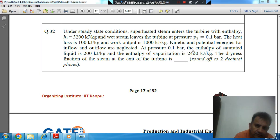At pressure 0.1 bar, the enthalpy of saturated liquid is 200 kilojoules per kilogram and the enthalpy of vaporization is 2400 kilojoules per kilogram. The dryness fraction of the steam at the exit of the turbine needs to be found, rounded to two decimal places.